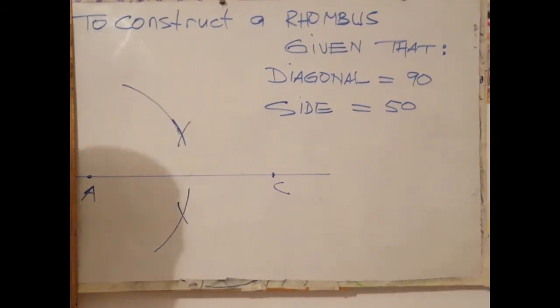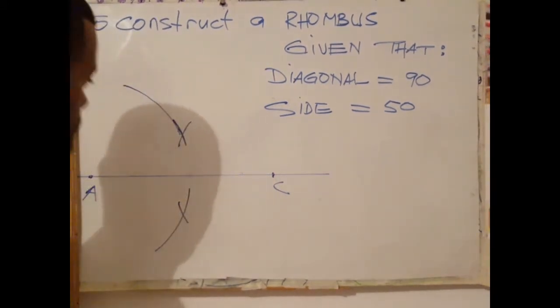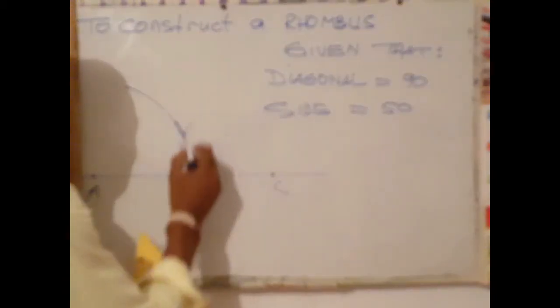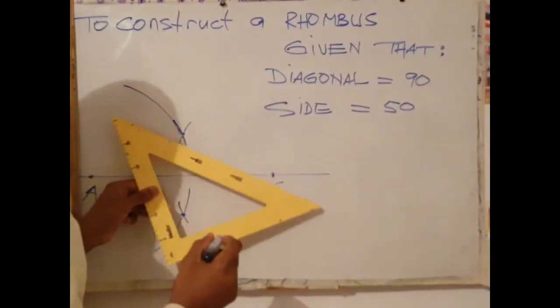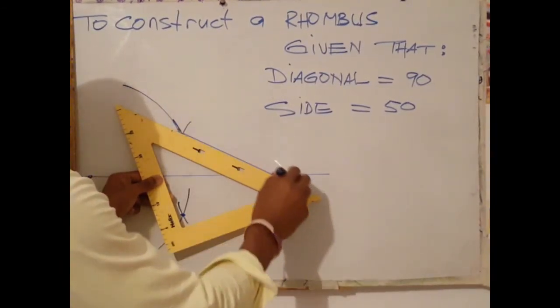This rhombus doesn't look too proper at all. At the point where both arcs meet here, join those two points.